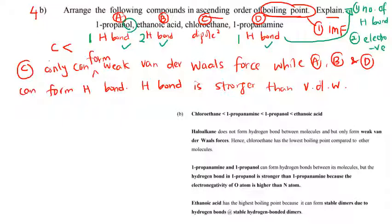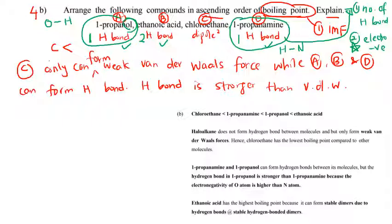Now comparing 1-propanol and 1-propanamine: both form one hydrogen bond, so we check the second factor — electronegativity. In 1-propanol the hydrogen is bonded to oxygen, while in 1-propanamine the hydrogen is bonded to nitrogen. Since nitrogen is less electronegative than oxygen, the hydrogen bond in 1-propanamine is weaker than in 1-propanol.